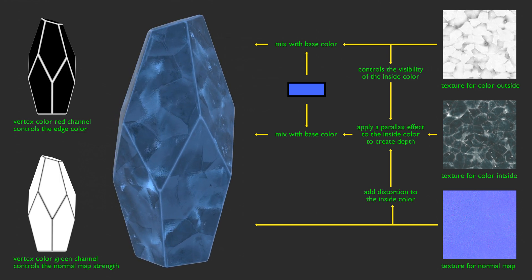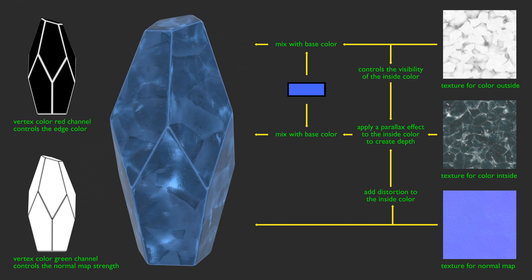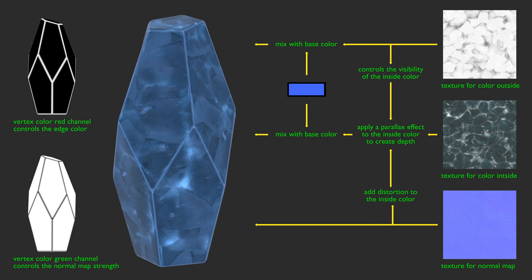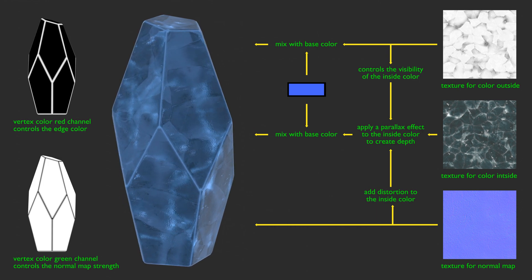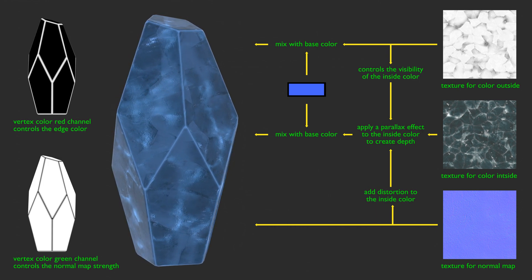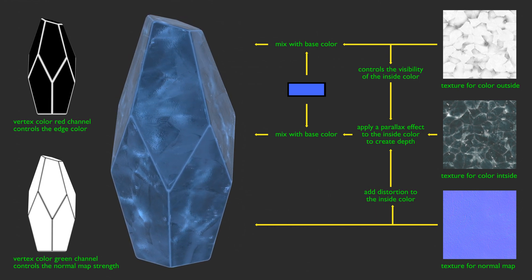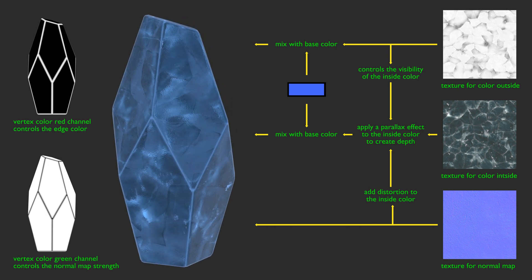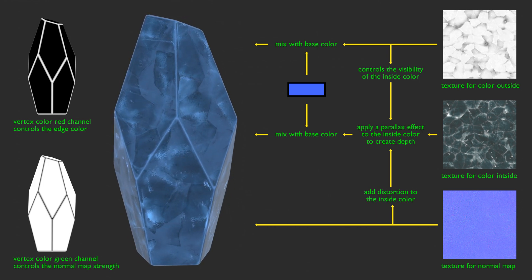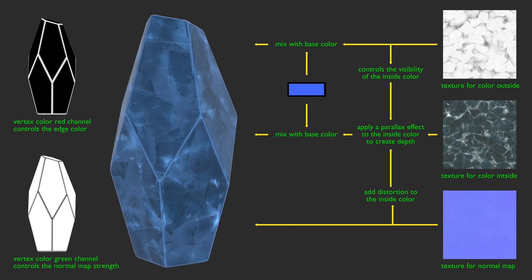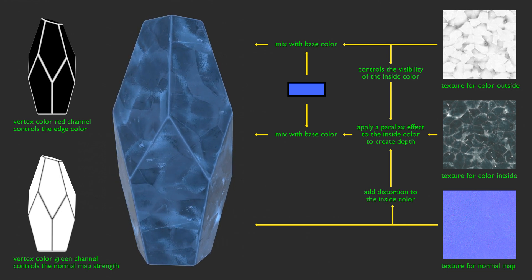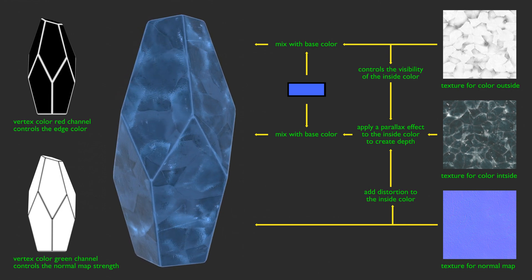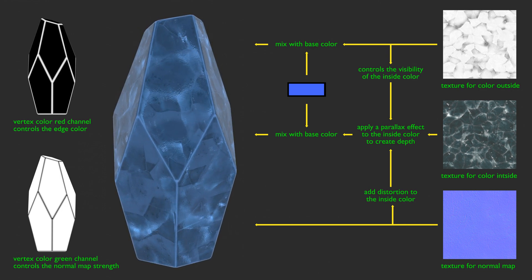I am using three textures. One controls the color for the inside, and the other one controls the color for the outside, which also controls the visibility for the inside color. I also use a normal map that will add some distortion to the inside color.